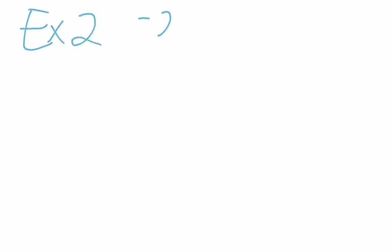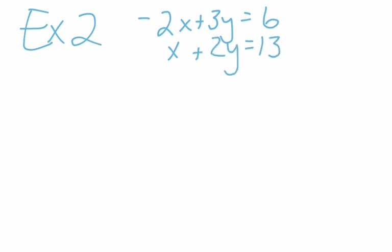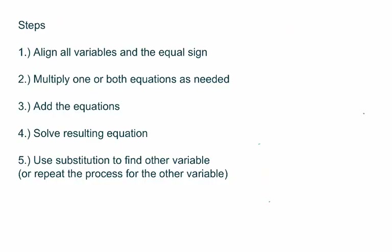Let's look at example two. This is negative two X plus three Y equals six, and then X plus two Y equals thirteen. Looking at our steps, step one is to line up your X's, Y's, equal sign, and constant. I check: X's lined up, Y's lined up, equals and constants lined up. So that part is done.